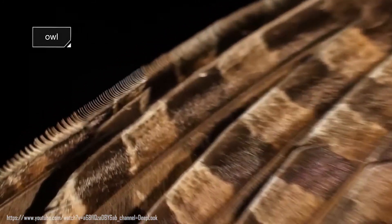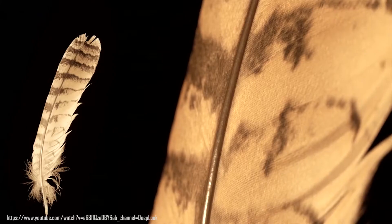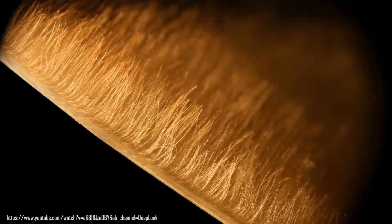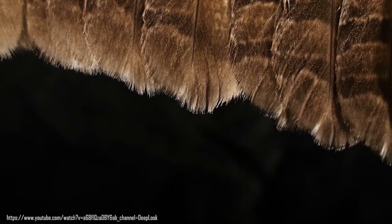The complex geometry in the leading edge, the fluffy surface at the bottom side of the wings and the fringes on the trailing edge of the wing have been recognized as noise mitigation devices.